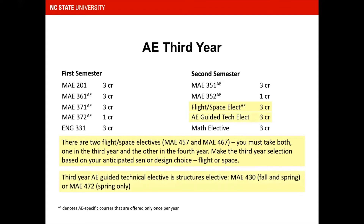The third year AE Guided Technical Elective is the Structures Elective. Choose from MAE 430, offered in fall and spring, or MAE 472, offered in spring only.